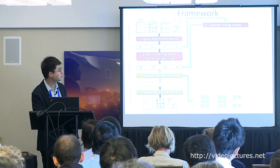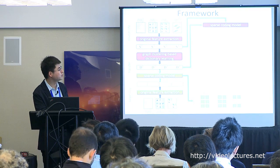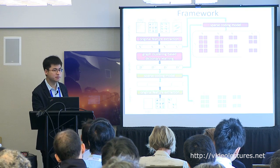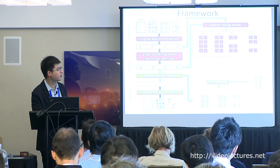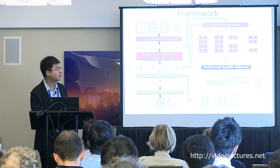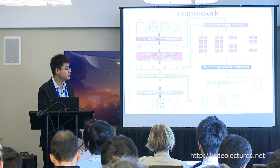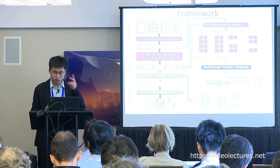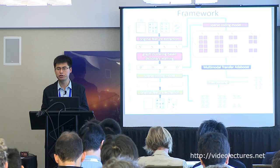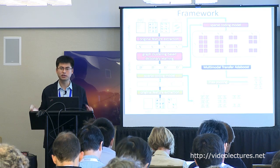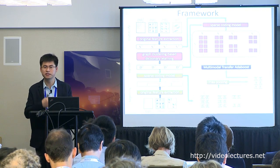We transfer the source city dataset into another representation via the dictionary. Now both cities' data are in the same space. Because there may be missing data, we apply max pooling, and then put data from the two cities together for training. In this way, we can transfer data from one city to another.